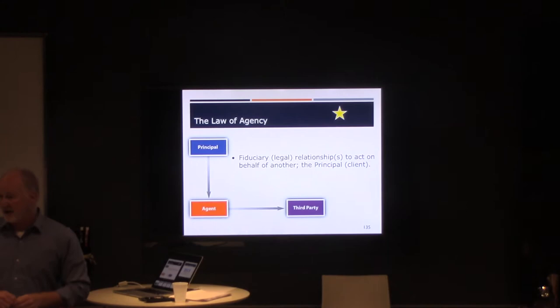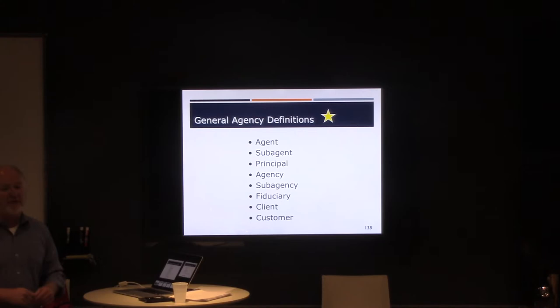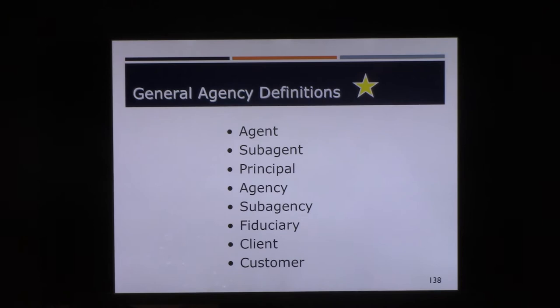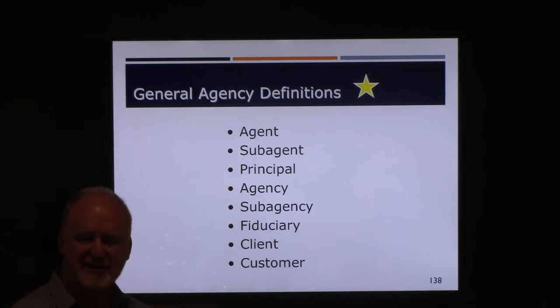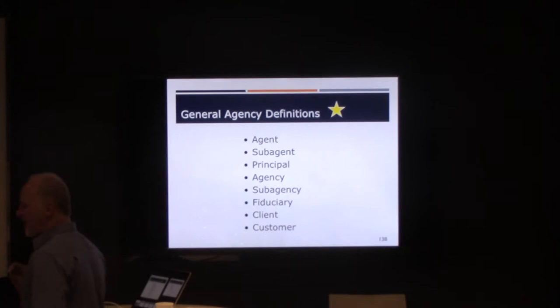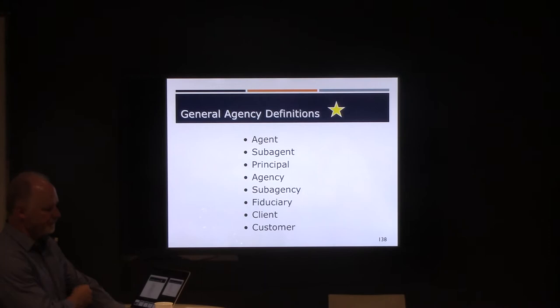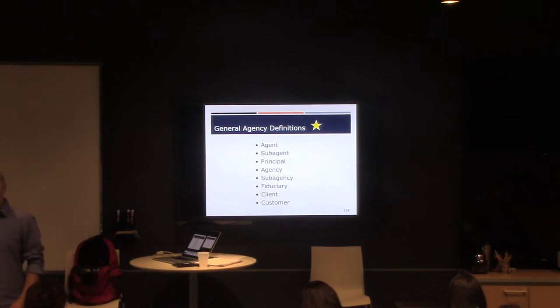You will get a chance to write those down in just a moment. Another word for a third party is a customer. Make sense? All right? We'll do an exercise later, so I'm skipping that for right now. Just like every chapter, we set up a little bit of vocabulary. You've heard some of it. So let's run through this list and just make sure that we have your vocabulary down. An agent. Definition of an agent. Listen closely. Is someone legally authorized to act on behalf of another party. An agent is someone who is legally authorized to act on behalf of another party.